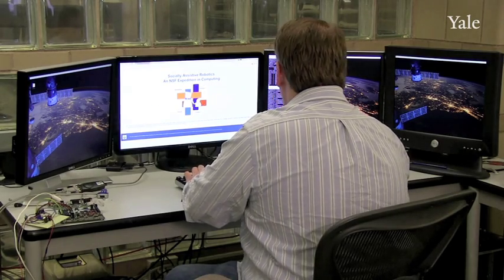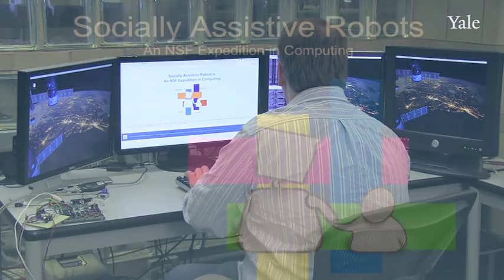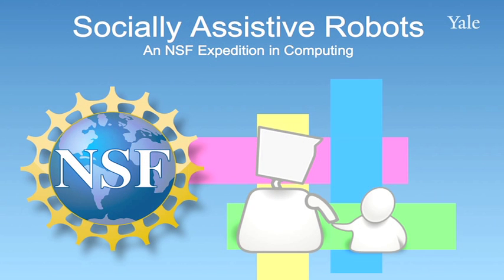My name is Brian Scaslati and I'm a computer scientist here at Yale University. Over the next five years I'll be working with colleagues at universities across the country in order to build robots that can help children. We're just starting out on this brand new five year project that's being supported by the National Science Foundation under the Expeditions in Computing program.